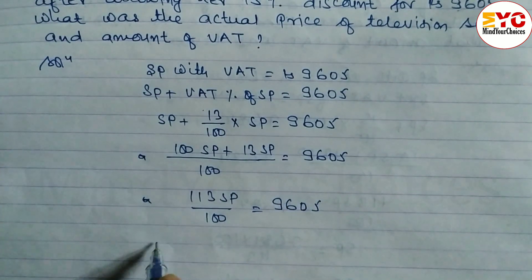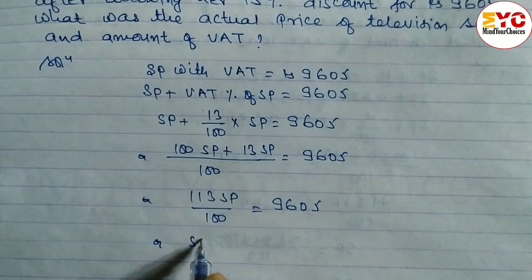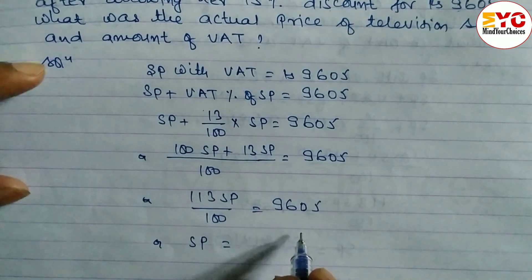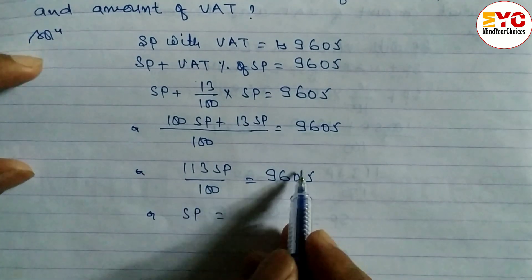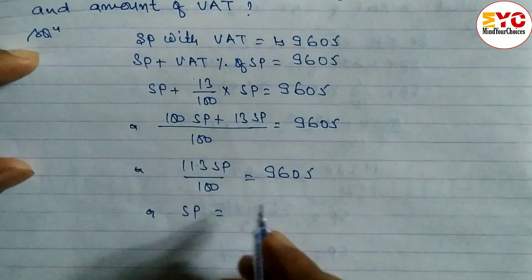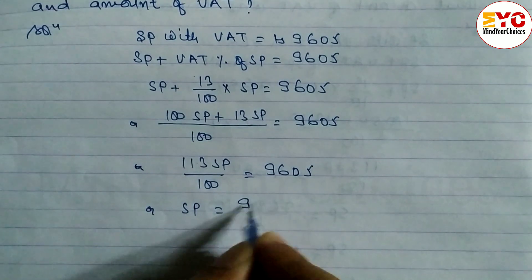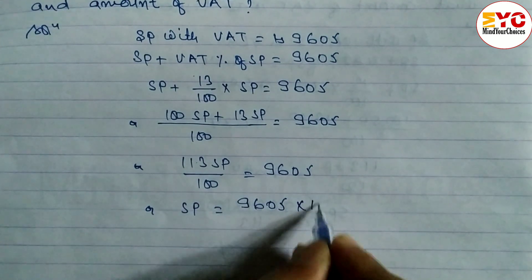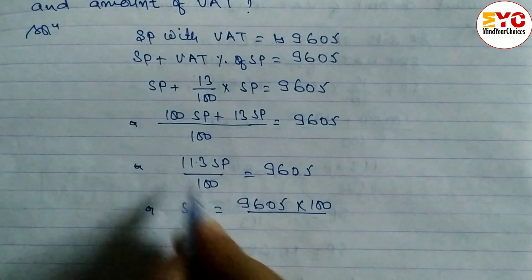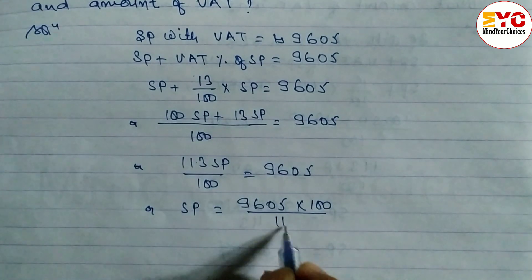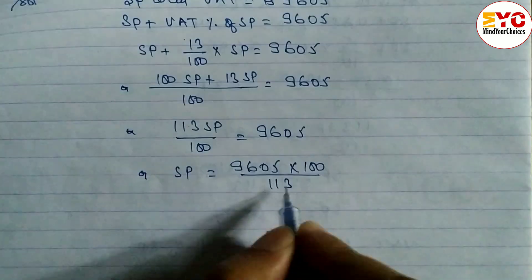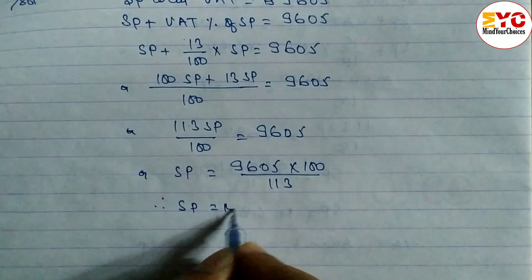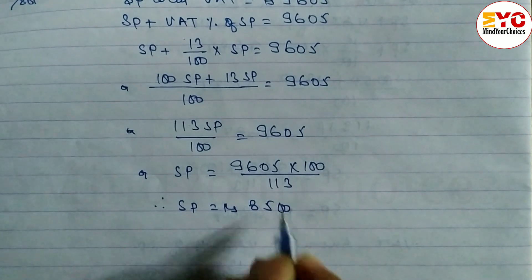Now cross multiply: if in denominator, take to numerator; if in numerator, take to denominator. So SP equals 9605 into 100 divided by 113. Therefore the value of SP is rupees 8500. This is the selling price — the actual price of the television is Rs. 8500.